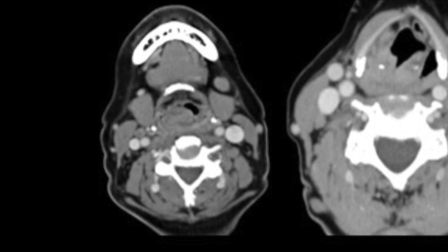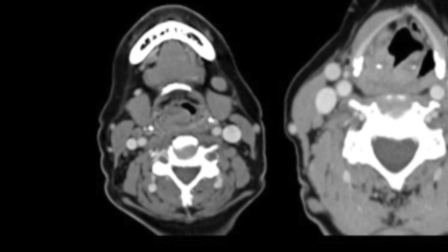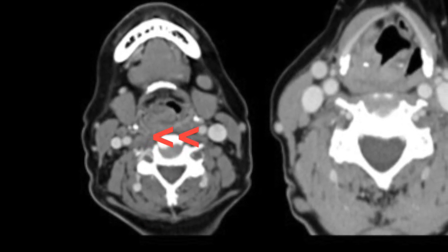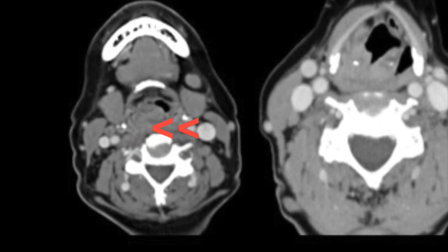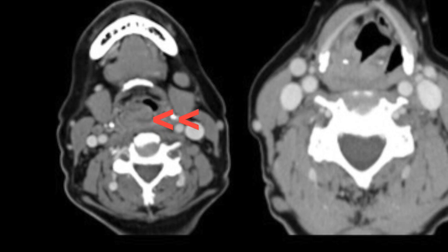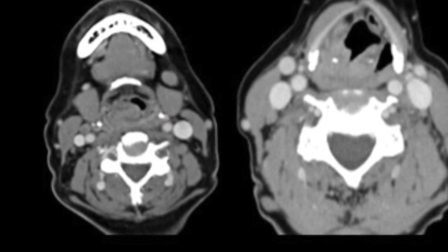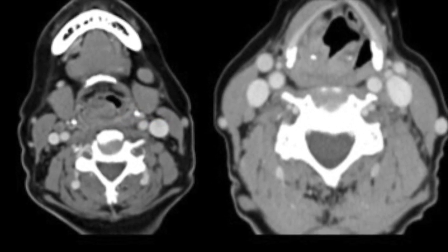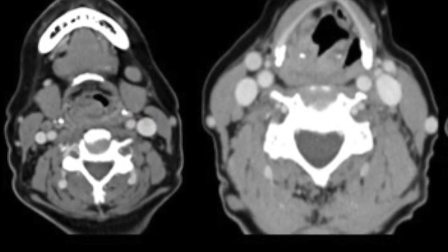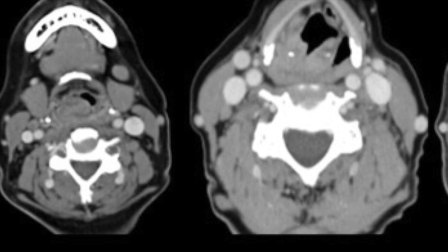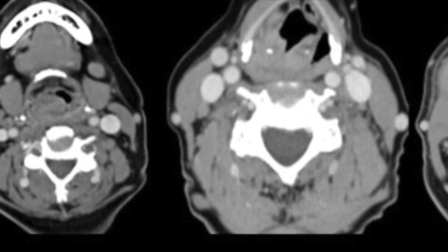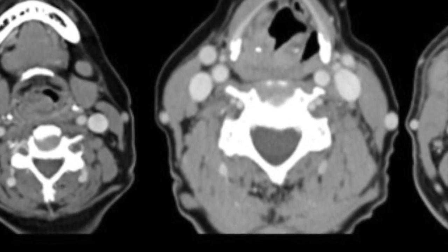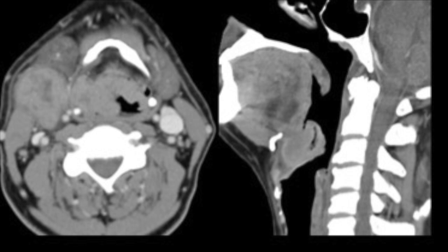In the first figure, we can see a small-volume right aryepiglottic fold lesion without any invasion of the pre-epiglottic space — this is an early T1 malignancy. In the next figure, we can see minimal invasion of the pre-epiglottic space, which is T2 disease.